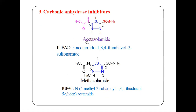The first example is acetazolamide. Acetazolamide has a five-membered heterocyclic ring with one sulfur and two nitrogen atoms. We give sulfur the preference for numbering, starting at position 1 — sulfur is at position 1.